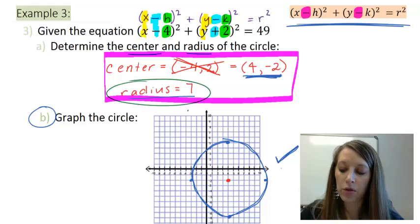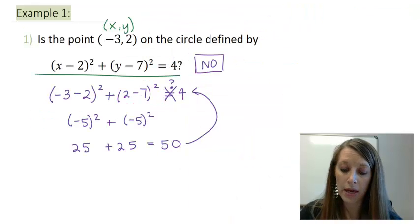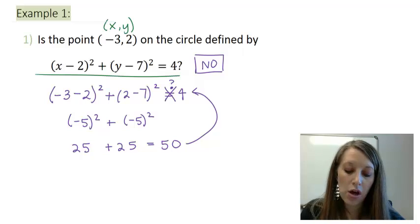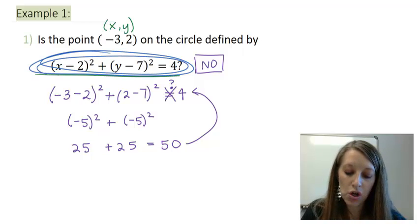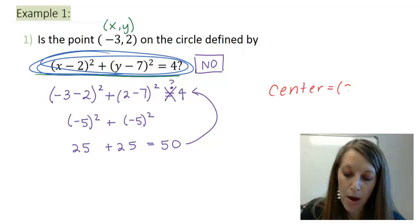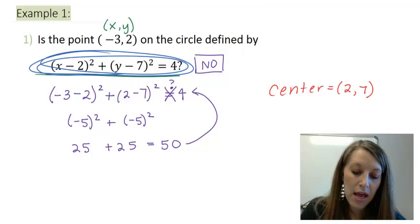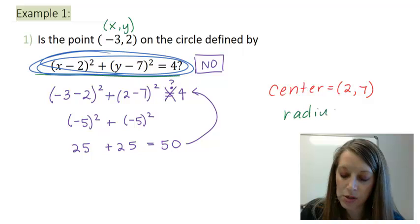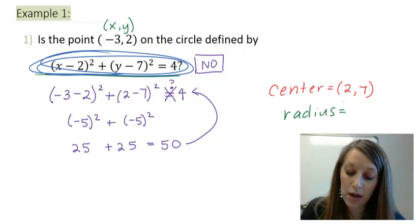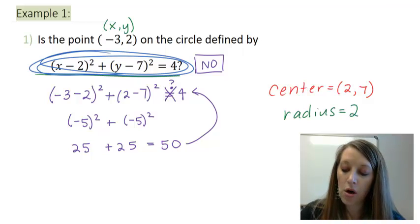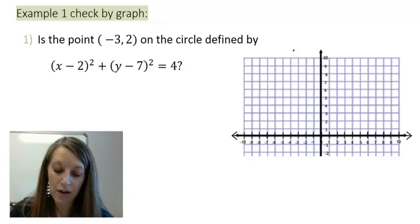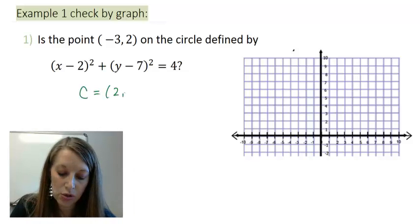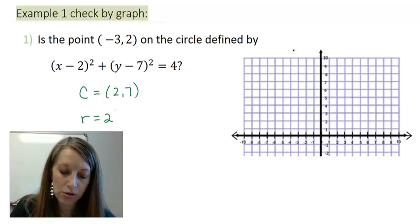So now that we've seen this here, let's go back and let's double check that example 1 by graphing it. So if I look at my equation of the circle here, I find that my center of this circle is given by positive 2 and positive 7. And my radius of this circle is given by the square root of this number here. So the radius is given by 2. So if I check this by graphing it, my center is again at (2, 7) and my radius is at 2.